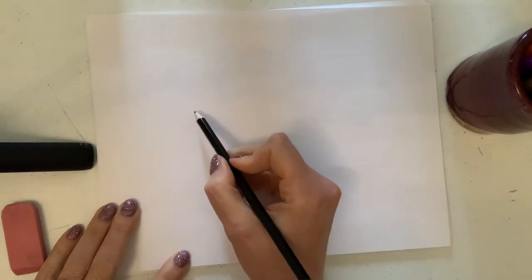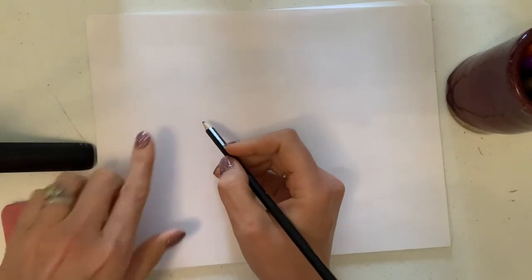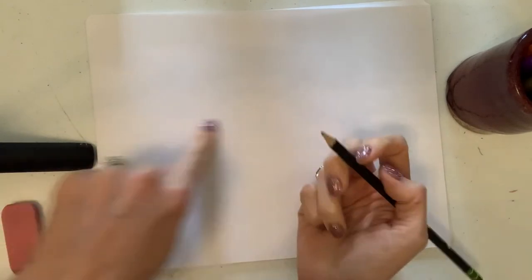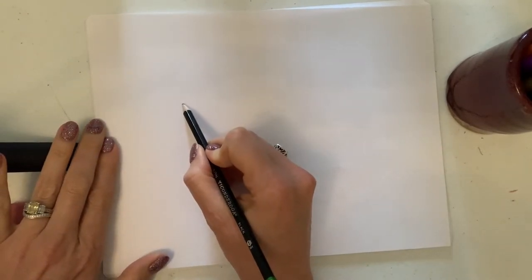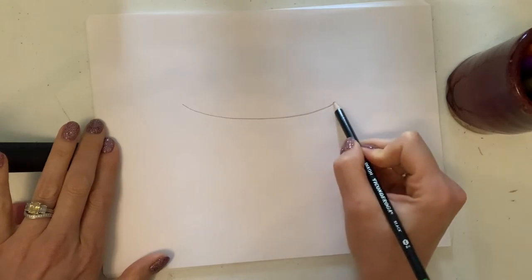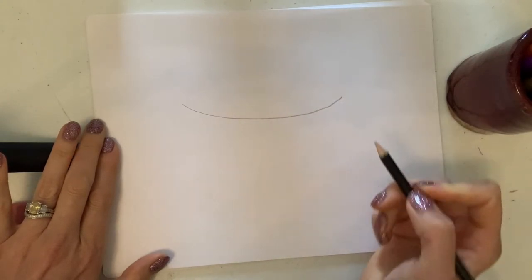And we're going to start out by drawing the top of our grocery bag. It's going to be just a little above the halfway point across your paper. So make a wide curved line.